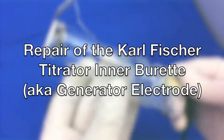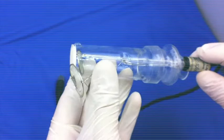This is a generator electrode, also referred to as an interburet. As you can see, this generator electrode has been damaged where the platinum wire and screen have become detached.